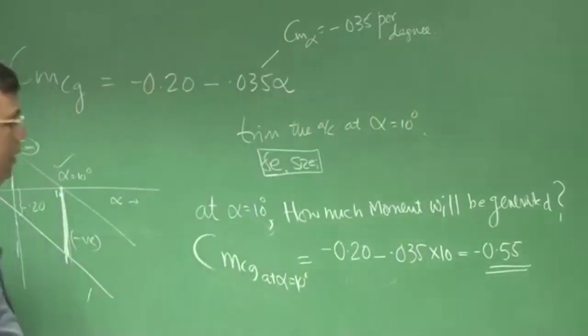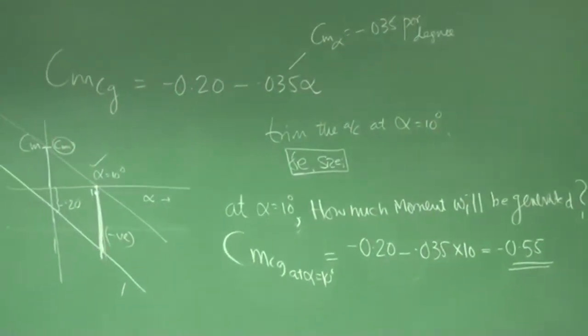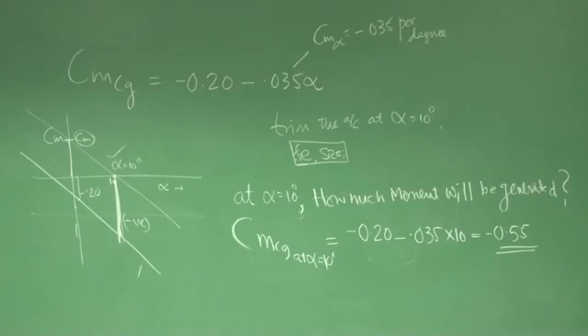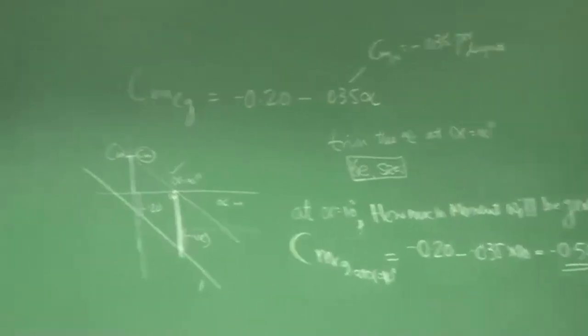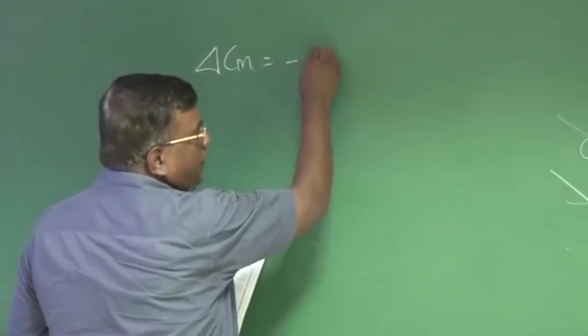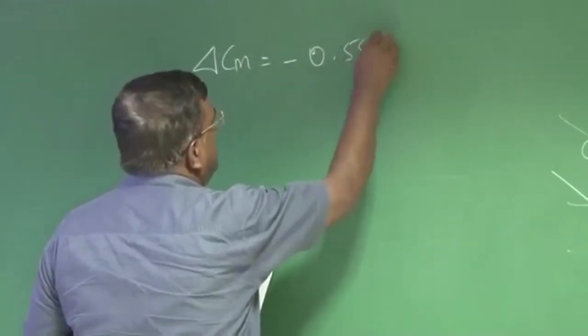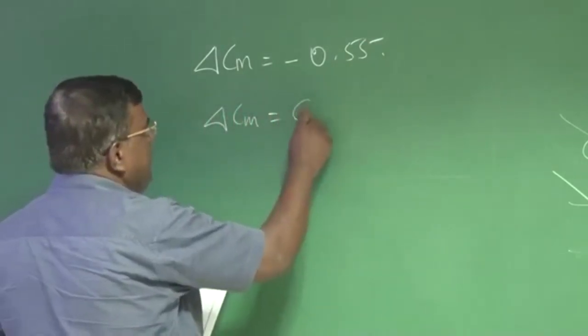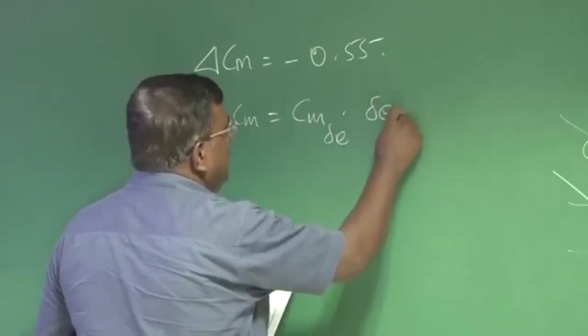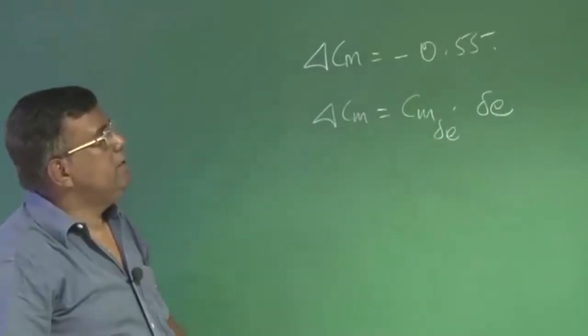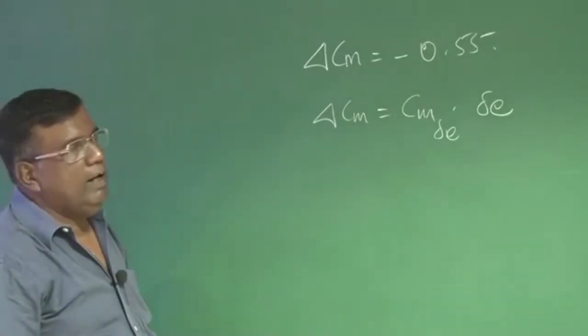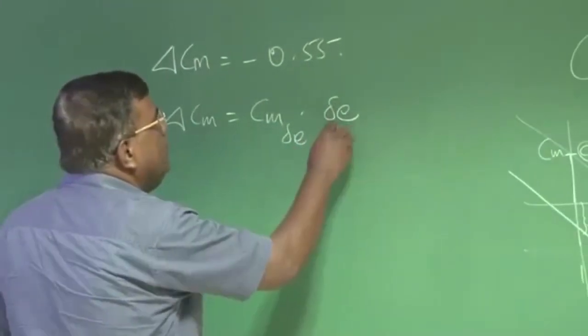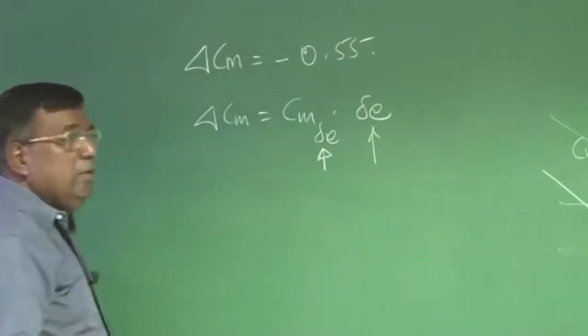So that much moment I have to nullify. And that will decide what is the elevator size. Now this delta CM, which is minus 0.55, should be nullified. So I write delta CM equals CM_delta_E times delta E. I have to nullify this delta CM by using elevator, and it is obvious that elevator should be up. Now the question is how do I visualize what is delta E, what is CM_delta_E as far as numbers are concerned.